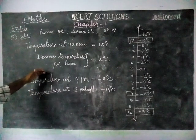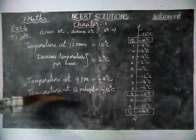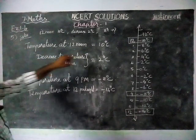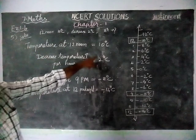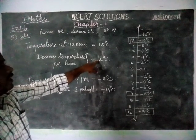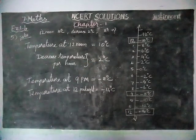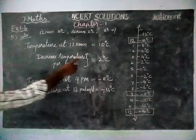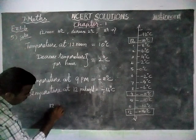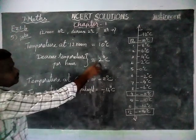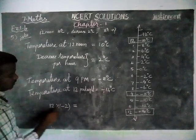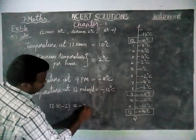Now for the same question, we are going to try it by using integers. Temperature at 12 noon is 10 degree Celsius, and decreased temperature per hour is equal to 2 degree Celsius, so we take this as a negative integer. From noon to midnight is 12 hours. So we calculate: 12 hours multiplied by minus 2 degree Celsius per hour equals minus 24.